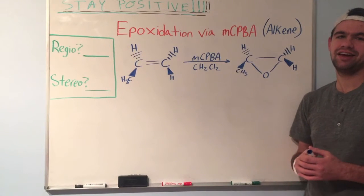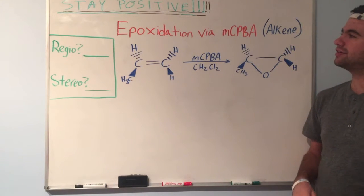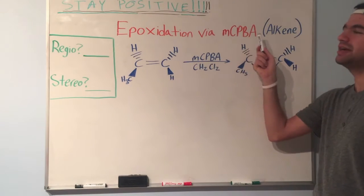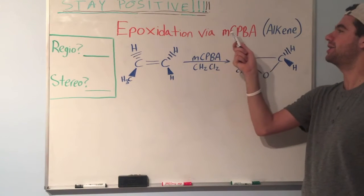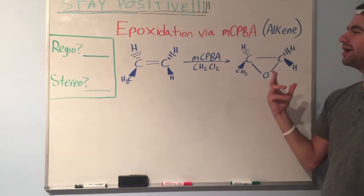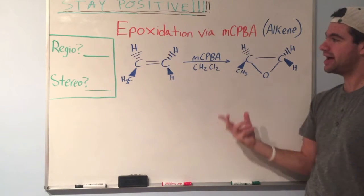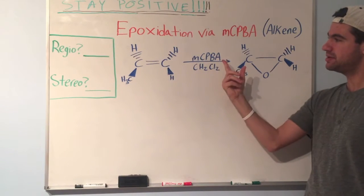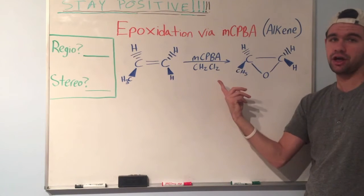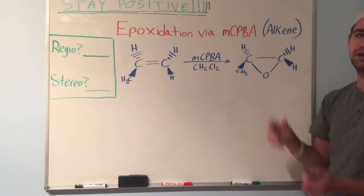Hey YouTube, how's it going? Yak Science here with another OCHEM video. The topic today is going to be epoxidation via MCPBA, or metachloroperoxybenzoic acid. Basically what it involves is we have an alkene, we're going to react it with MCPBA and CH2Cl2, which is a solvent commonly used in this reaction, and we get an epoxide.